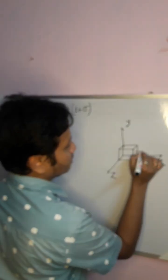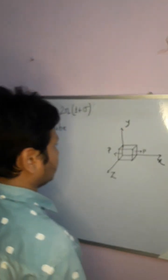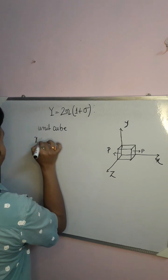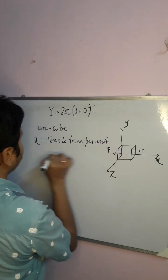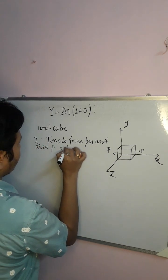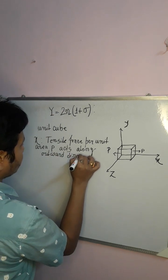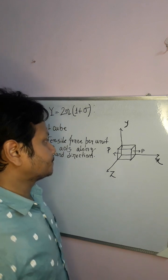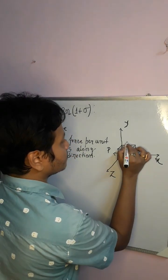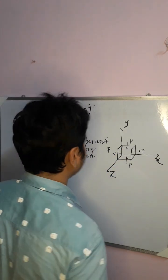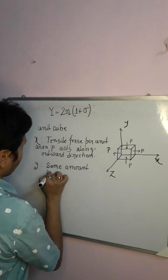In this case, suppose a tensile force per unit area P acts along the x-axis outward. Similarly, along the y-axis we apply a compressive force — the same amount of compressive force acts along the y-axis.